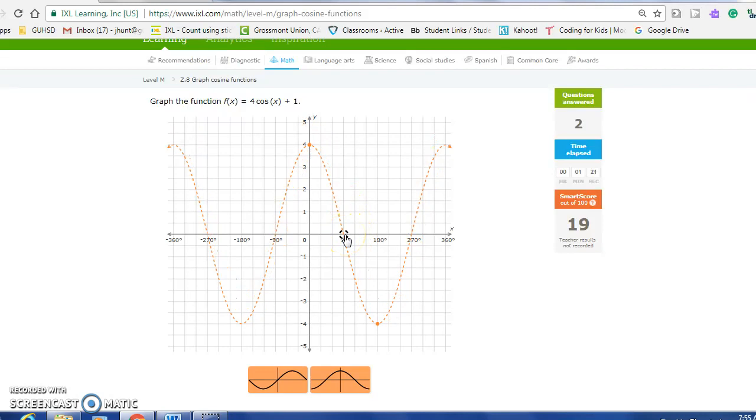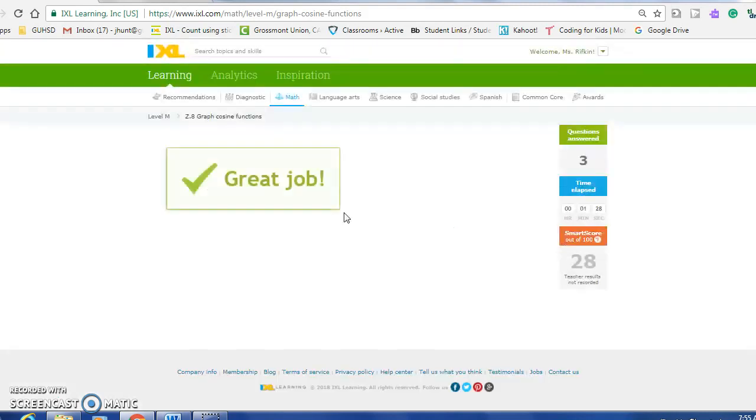What I'm going to do is I'm at 0. I'm going to go up to 1. Make it solid, press enter, and you're done.